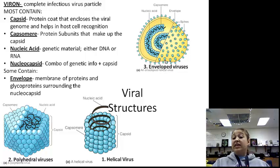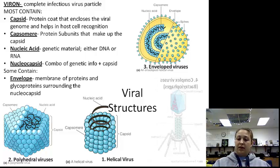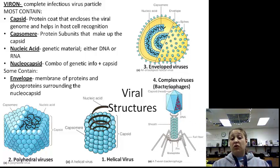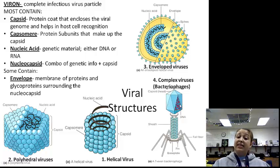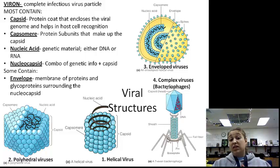Next, we have the enveloped virus. We've got the nucleocapsid inside — which is our capsid with our nucleic acid inside, made up of the capsomeres — and then we've got an envelope around it. Finally, we have our complex viruses or bacteriophages. We have the capsid as the head, the DNA inside, a sheath, a plate with some pins, and tail fibers. The base pins and tail fibers help it land on the cell, then it squeezes its DNA into the cell. We'll learn more about that when we talk about reproduction.